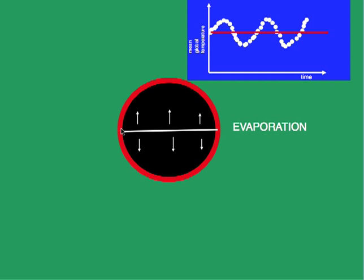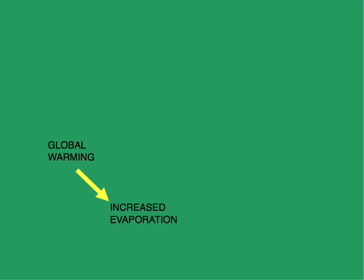Temperature increases just a little bit above the equilibrium level, then it is regulated and brought back down a little bit below the equilibrium level. Over time, this negative feedback maintains a steady state with small deviations above and below the equilibrium point. Let's summarize this with a feedback loop: global warming brings increased evaporation, which in turn brings more snowfall in the polar regions.